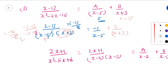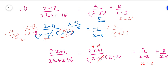Substitute x equals 2, removing the (x minus 2) factor: 2 times 2 plus 1 equals 5, divided by (2 minus 3) equals minus 1. So 5 divided by minus 1 equals minus 5. Therefore A equals minus 5/(x minus 2).